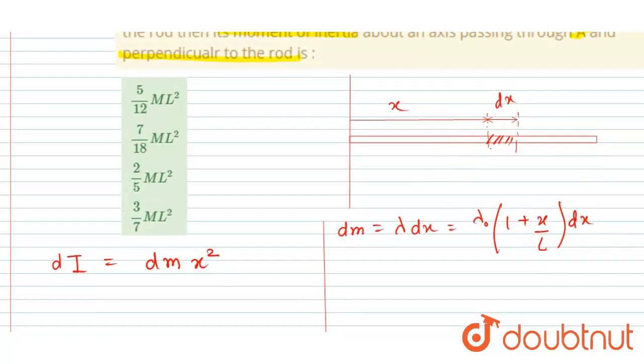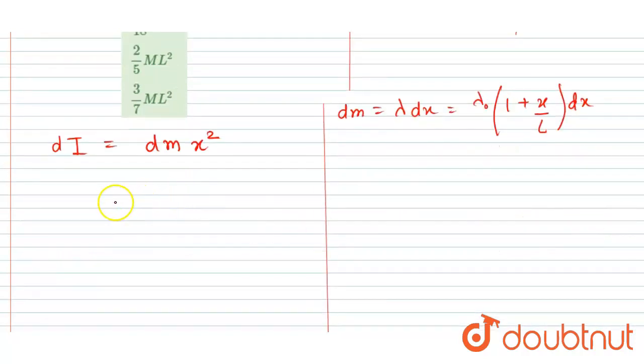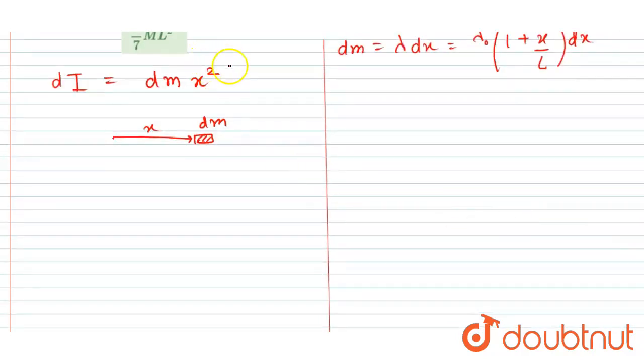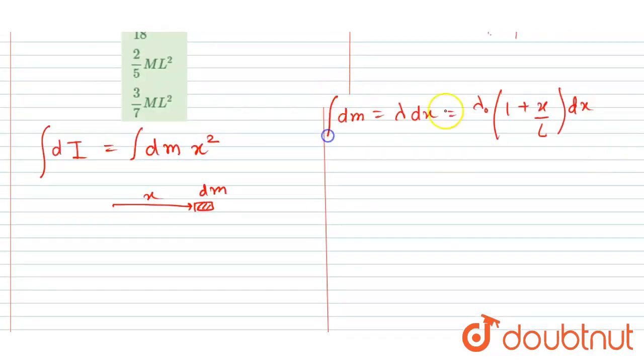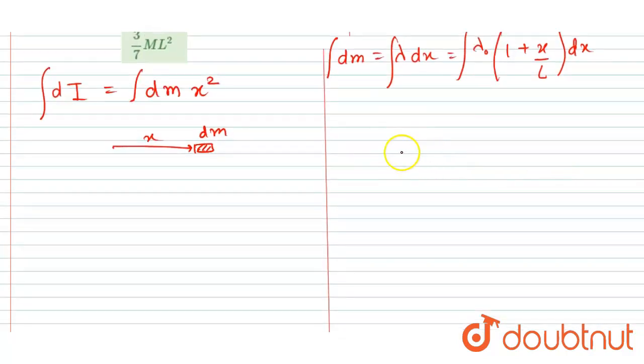So I wrote here, this DM particle is at a distance of X from the axis. This will be the moment of inertia of this DM particle. If I integrate this expression, then I will get the moment of inertia of the whole rod, and if I integrate this expression, then I will get the mass of the whole rod.